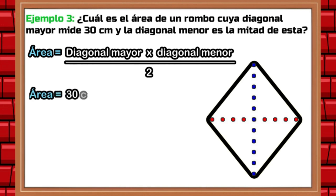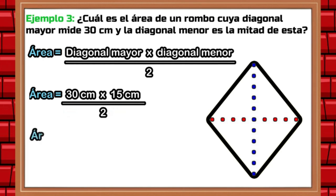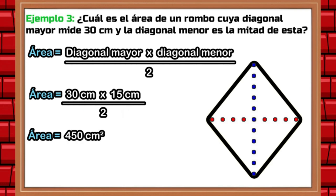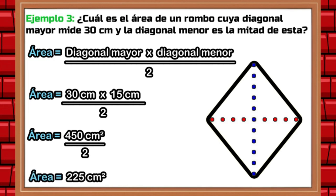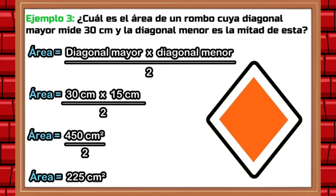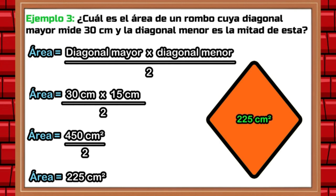Area is equal to 30 centimeters times 15 centimeters divided by two. Next, we multiply 30 by 15, which results in a product of 450, and multiplying centimeter by centimeter gives us the unit of square centimeters. In other words, it is 450 square centimeters. We divide this amount by two. When you take the number 450 and divide it by two, it equals 225. The area of the rhombus, therefore, is equal to 225 square centimeters.